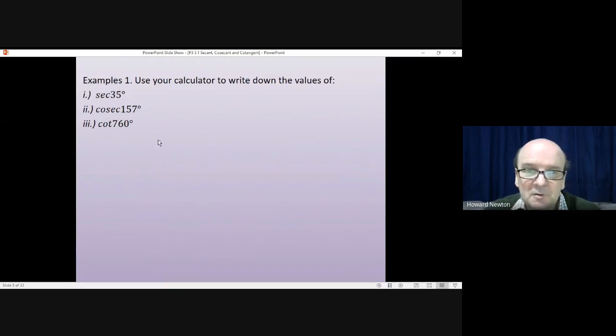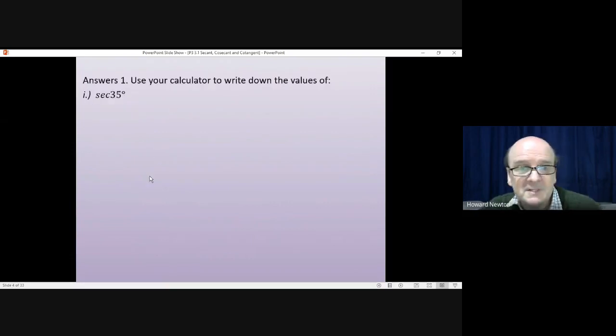Okay, we'll go through these together. First of all, the sec of 35 degrees. The first thing you have to say is that's 1 divided by the cos of 35 degrees. That you can look up on the calculator. It gives you about 0.819. Do that division, and you get about 1.22.